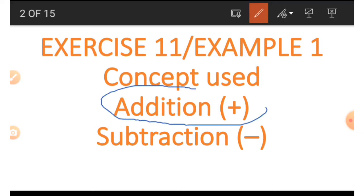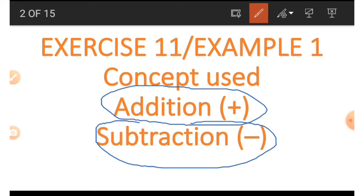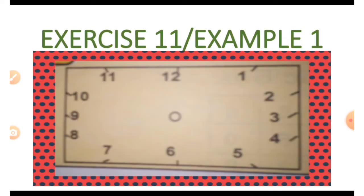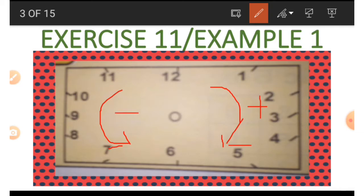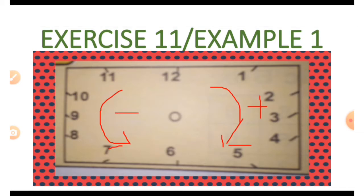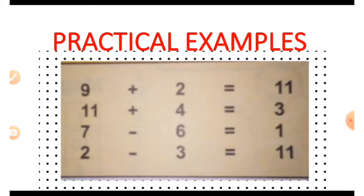The concepts used in this exercise are addition and subtraction — plus and minus. Let's look at the picture. We see a picture of an analog clock with numbers 1 to 12. When we move in a clockwise direction we call it plus, and when we move in an anti-clockwise direction we call it minus.